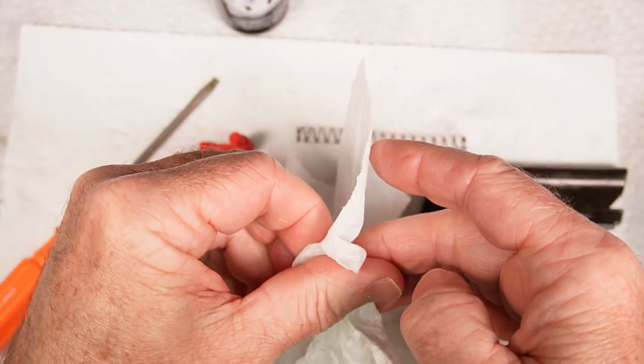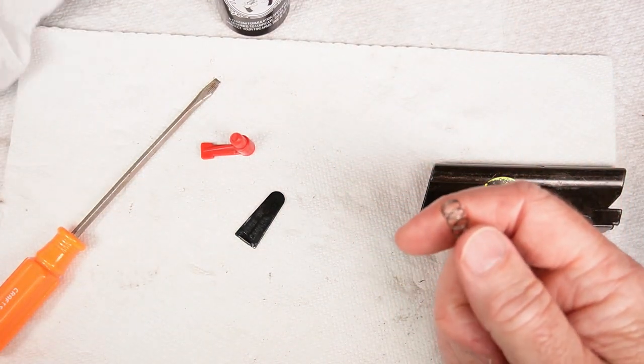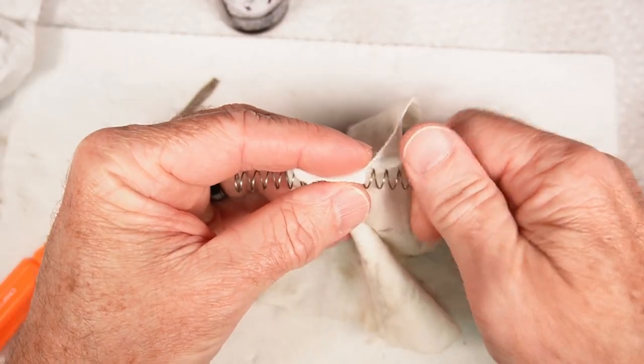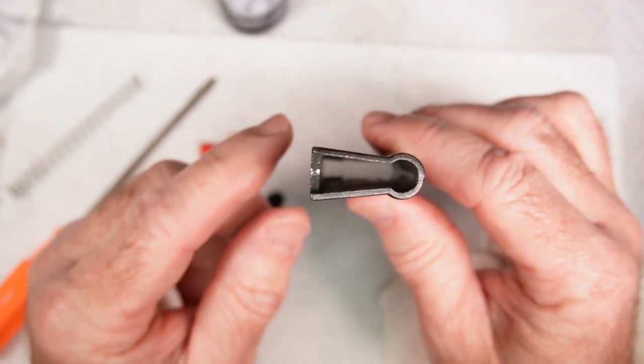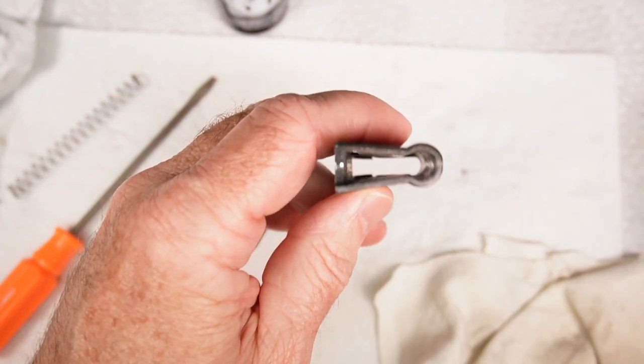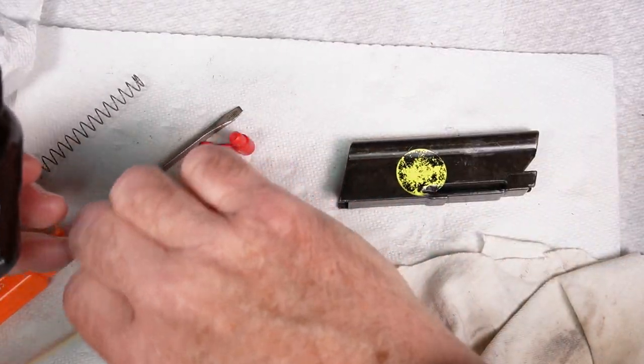I would do the same for all the parts—just wipe them down real good. If they're real dirty, you can use a solvent on the metal parts. I'll just kind of wipe the spring off with a rag or something like that. The inside of the tube can get kind of gritty and dirty; that's where you're really going to want to clean. So I'm going to use original gun oil. I want to make sure that when I'm done, I clean that up real good and get that out of there.